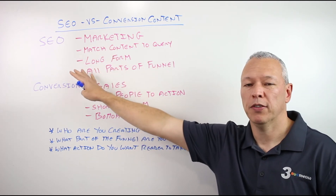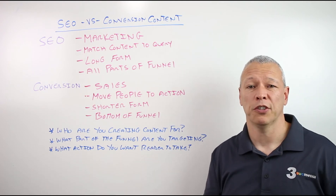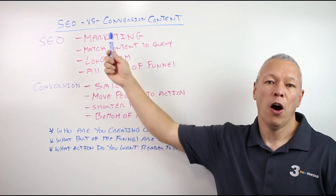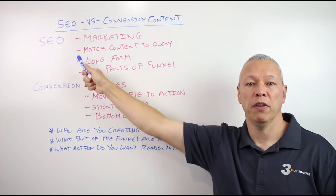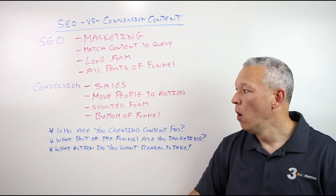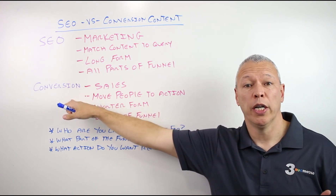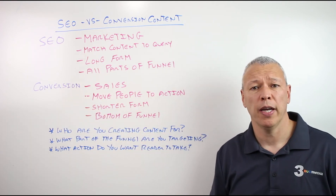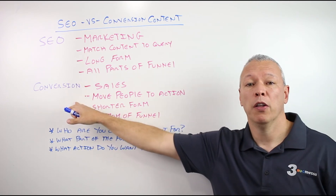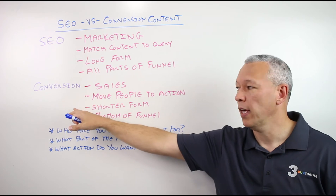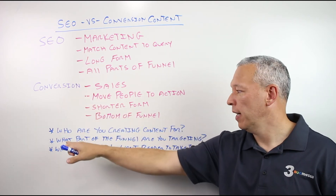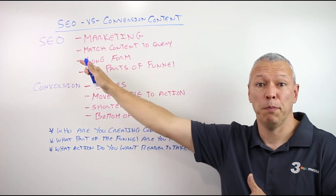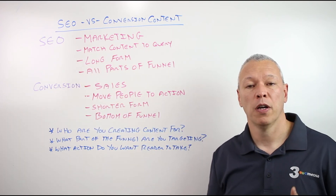When it comes to both types of content, there are a couple of questions you should ask yourself. Number one: who are you creating this content for? Are you creating it for the search engines — marketing purposes to get people to find the content in Google and come to your website? Or are you trying to convert an existing audience, like people on social media, your email list, people visiting your website, or people coming through ads like Facebook ads or Google AdWords? Think about the purpose of the content and who you're creating it for, and that'll help you determine whether to do longer form keyword based content or shorter benefit-focused sales content.